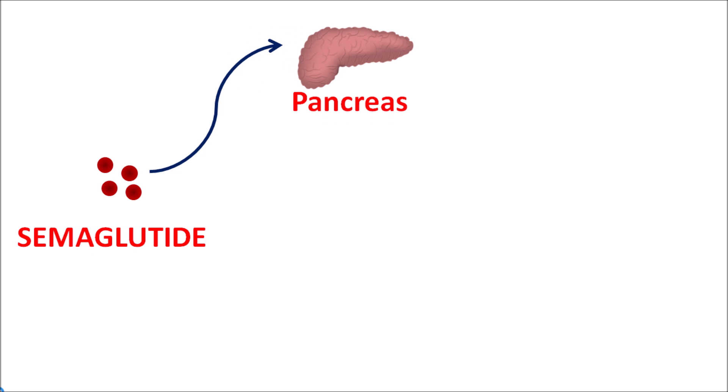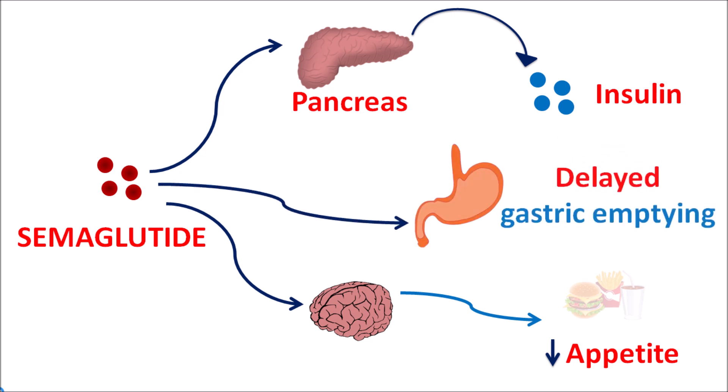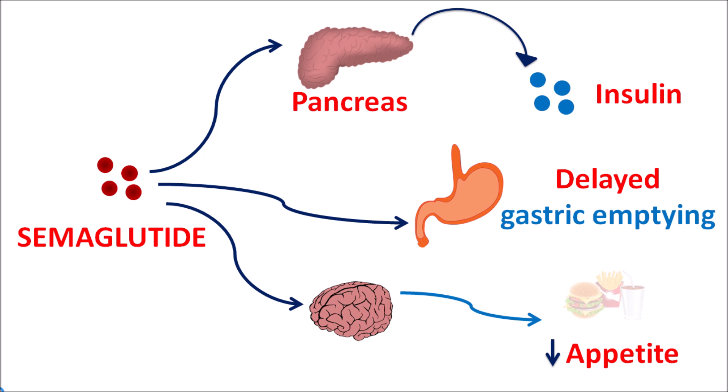Semaglutide produces its action by acting on three organs. Its main action is on the pancreas, where it increases insulin secretion from beta cells, resulting in decreased glucose levels. It also acts on the brain, where it reduces appetite, leading to reduced body weight — which is why it can be used in obesity management. Additionally, this drug produces delayed gastric emptying, resulting in decreased absorption of glucose.